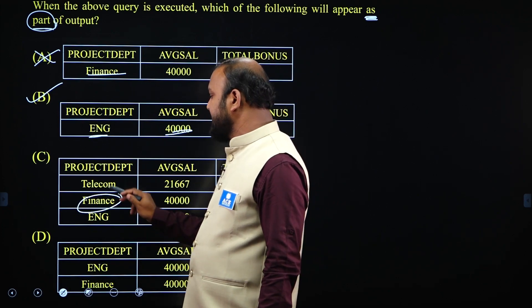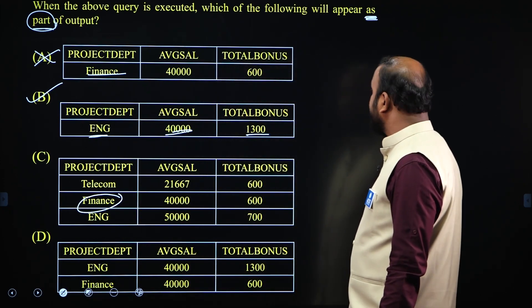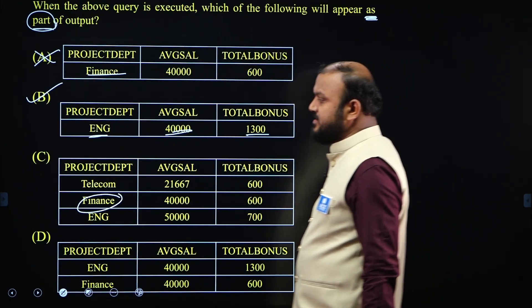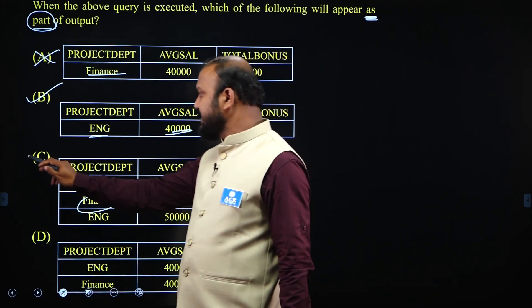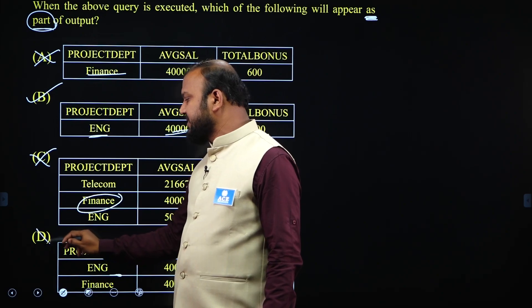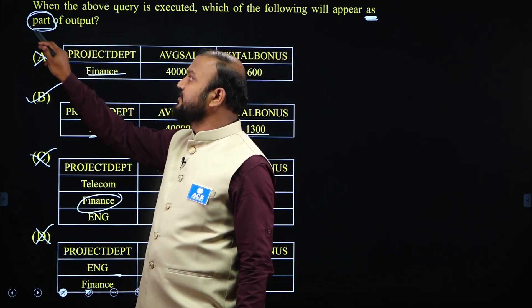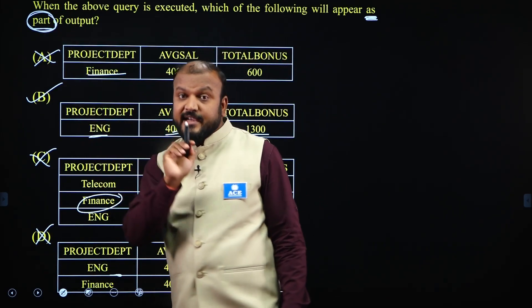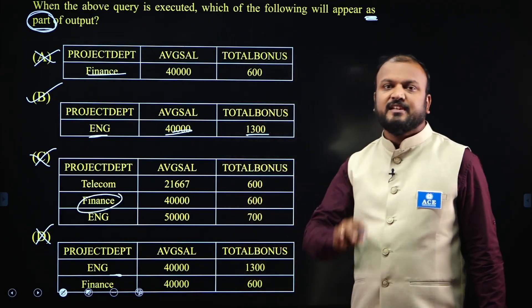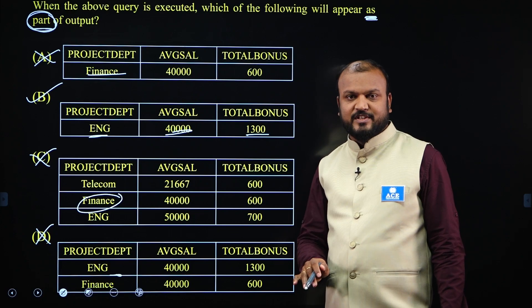Finance is not in the output, so C is incorrect, and because finance is not in the output, D is also incorrect. The question asks about part of the output — reading the question carefully is very important. Read the question carefully and answer it according to the process of evaluation. SQL definitely plays an important role.